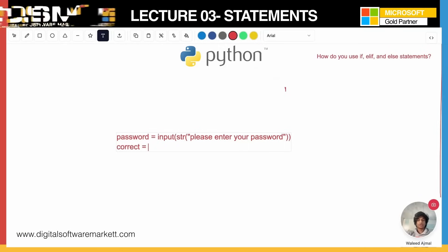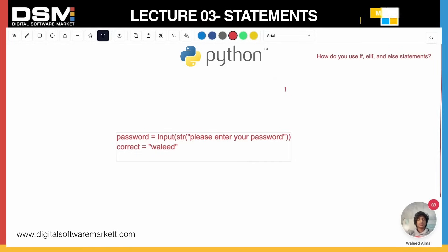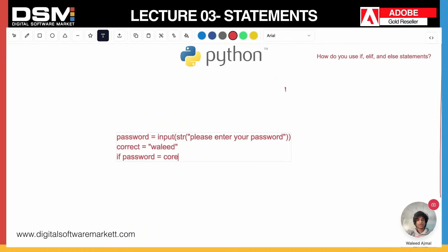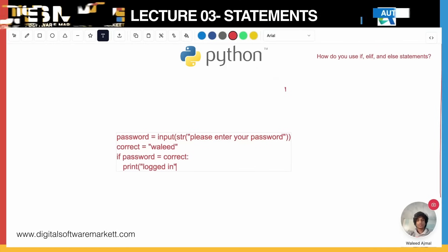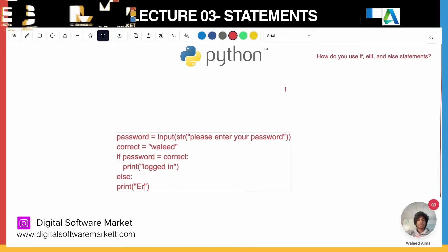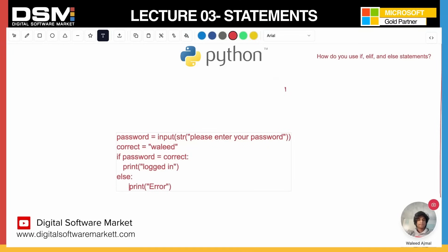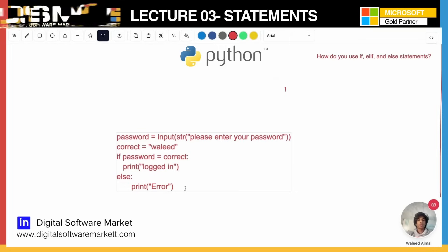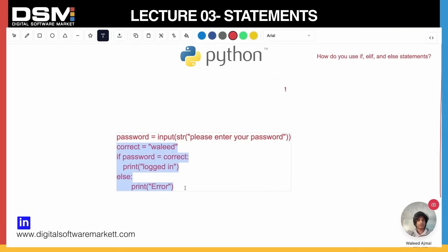We also need to store the correct password: correct = 'this is my correct password'. Then we define an if statement: if password == correct, then print 'logged in'. Else, print 'error'. In a real program you'd use exception handling, which we'll learn later, but for now we'll just print error.